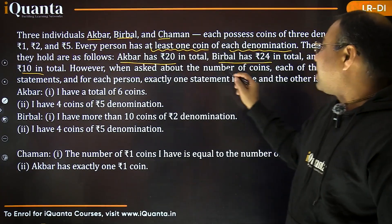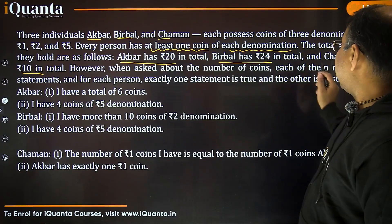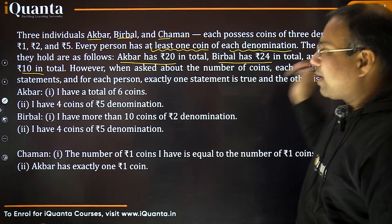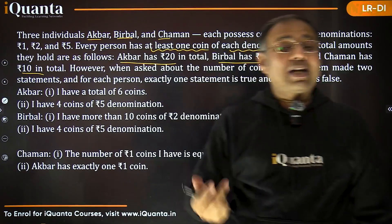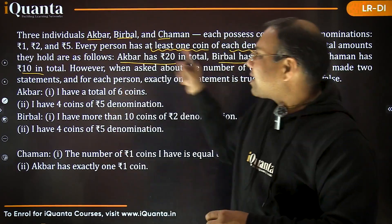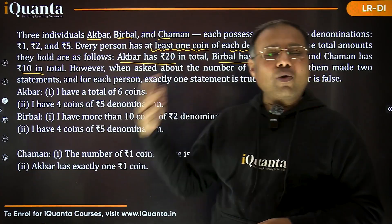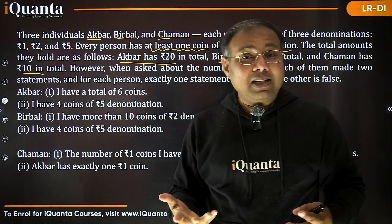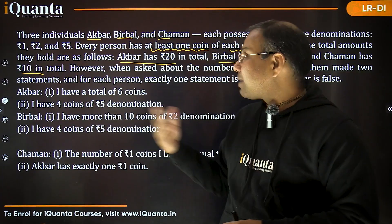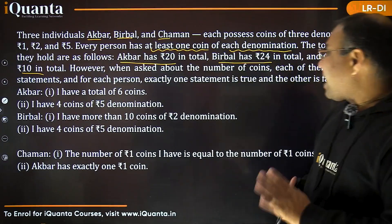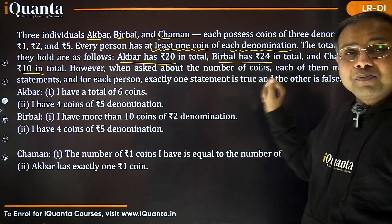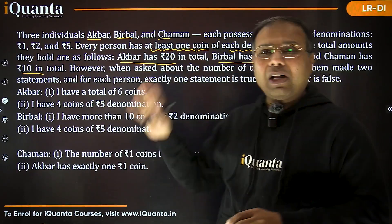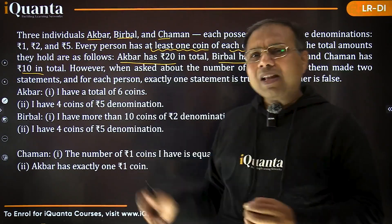However, when asked about the number of coins, each of them made two statements, and for each person, exactly one statement is true and the other is false. So it is a combination of two things — we need to make a table and arrange the number of coins each person has of each denomination, just like binary logic: true and false type questions.